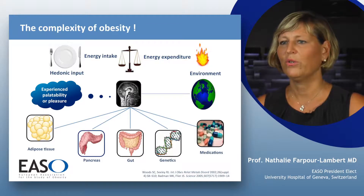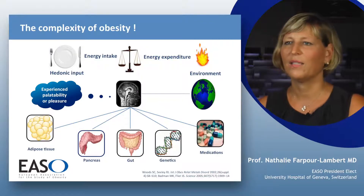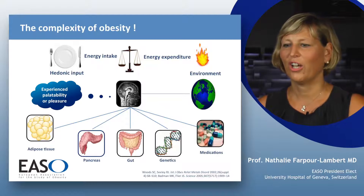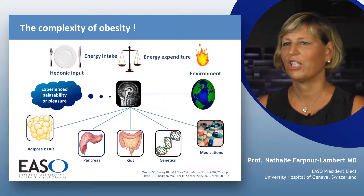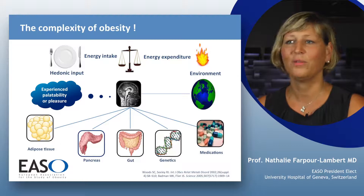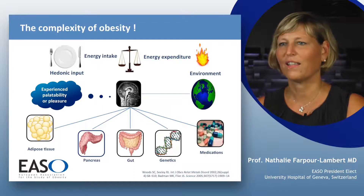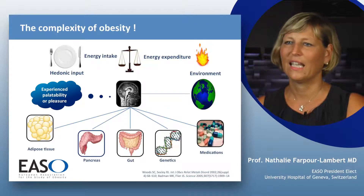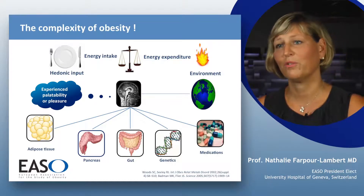We know now that many organs are also playing an important role in the development of obesity. The adipose tissue is in communication with the brain as well as the gut, the liver, and the pancreas, and we also know that genetic factors are contributing to the development of the disease. Not everybody develops obesity and some families are more at risk than others. Medication can also play a role in both the development or the treatment of obesity.